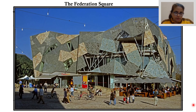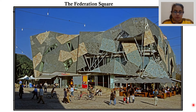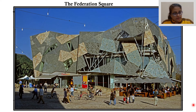The picture you see on your screen is Federation Square. It was constructed in the year 1998 and was opened for the public in 2002. It was built to mark the 100th anniversary of the Federation of the Australian States, which was passed in 1901. Federation Square is located in the city of Melbourne.